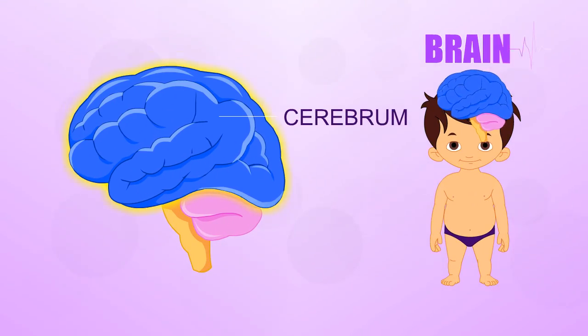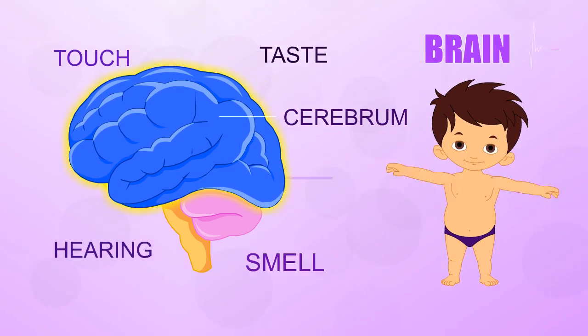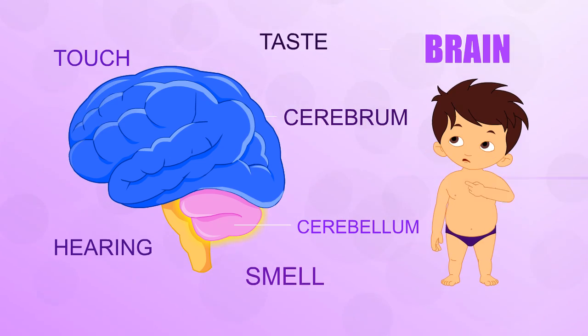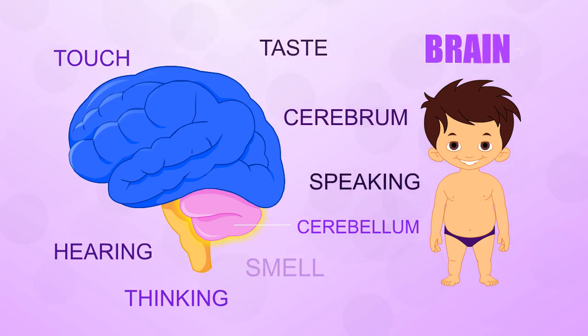The cerebrum is the main part of your brain. It gets and stores information and controls your movements. The cerebrum is also responsible for thinking, speaking and performing complicated tasks such as sums.